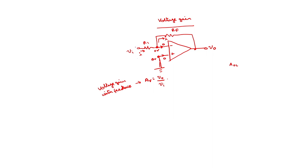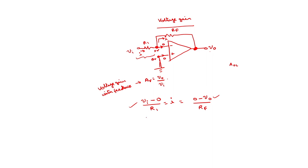The expression for the current I: from the input side, I equals VI minus 0 divided by R1, which equals VI/R1. From the output side, I equals 0 minus V0 divided by RF. Equating these two expressions: VI/R1 equals minus V0/RF, which gives AV equals V0/VI equals minus RF/R1.